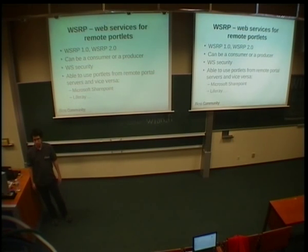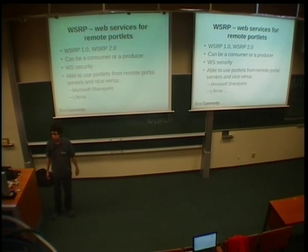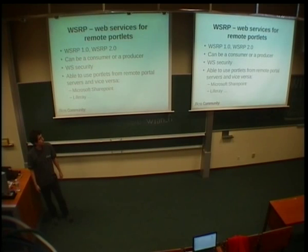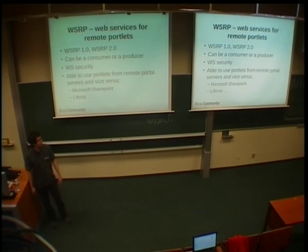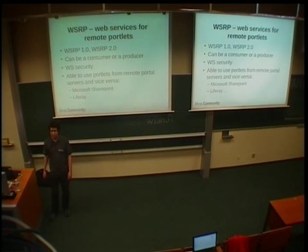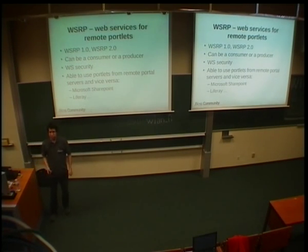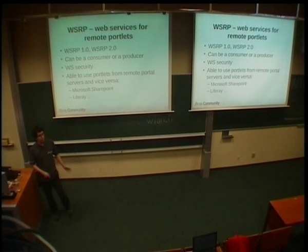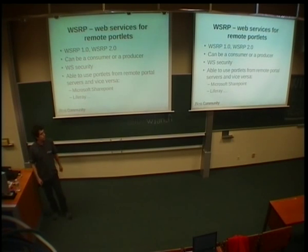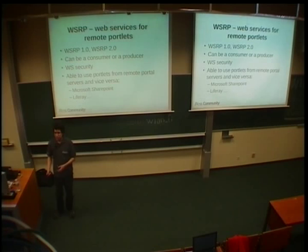WSRP is an OASIS-approved standard network protocol for communications for remote portlets. We support both versions, WSRP 1 and 2. Basically it's a server-client setup — you have a producer server which provides you some portlets that you can use remotely on your consumer. You can deploy some portlets on your server and your customers, or whoever, can use these portlets and add them to their page. The user won't know that they're using remote portlets — it will behave the same way as if it were deployed on their server.